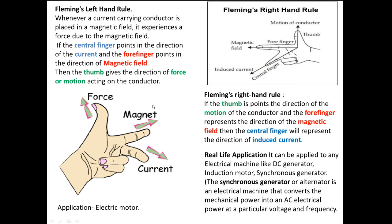Here see, everything is the same. Here also thumb, that is the force or the motion. In the left hand rule, forefinger points along the magnetic field. Here also the forefinger points the direction of magnetic field. Then central finger points the direction of induced current. So both are the same.